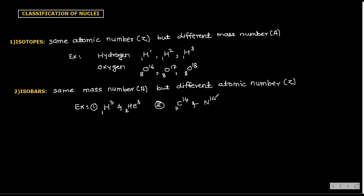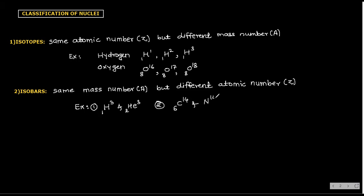A second example of isobars: carbon-14 (⁶C¹⁴) and nitrogen-14 (⁷N¹⁴) — same mass number A = 14, but different atomic numbers Z = 6 and Z = 7. These are isobars.